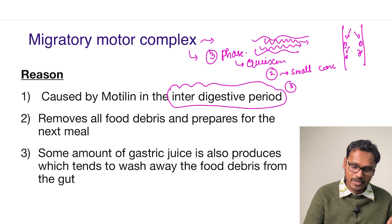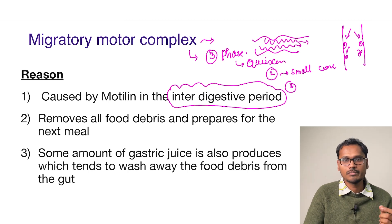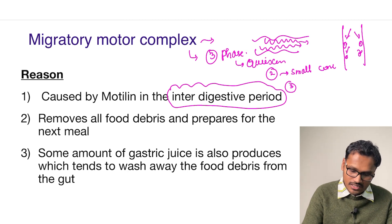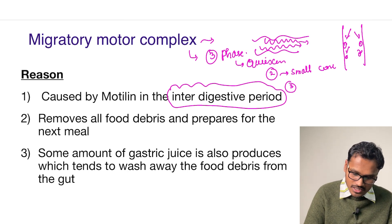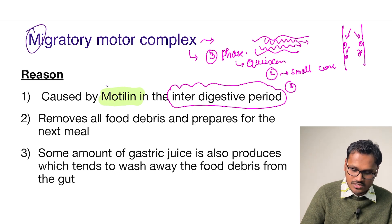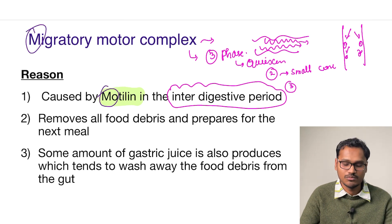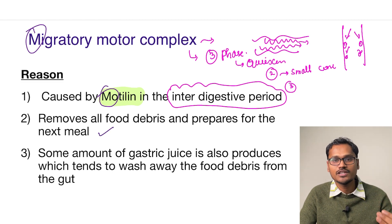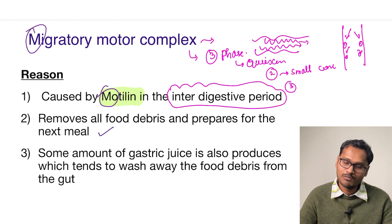This sweeping is done with the help of the migratory motor complex, and an important hormone is essential for it — motilin. It is easy to remember: it creates the migratory motion, so it is called motilin. It removes all the food debris and prepares the gut for the next meal.